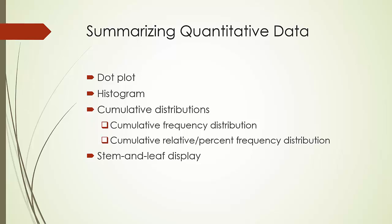A dot plot is a graphical device that summarizes data by the number of dots above each data value on the horizontal axis. This horizontal axis shows the range of the data, and each data point is represented by a dot placed above the axis. Histogram is probably the most useful graphical presentation for quantitative data. It displays a frequency or relative frequency distribution by placing class intervals on the horizontal axis and frequencies or relative frequencies on the vertical axis. I will show you how to plot a histogram with Python's matplotlib in the next video.